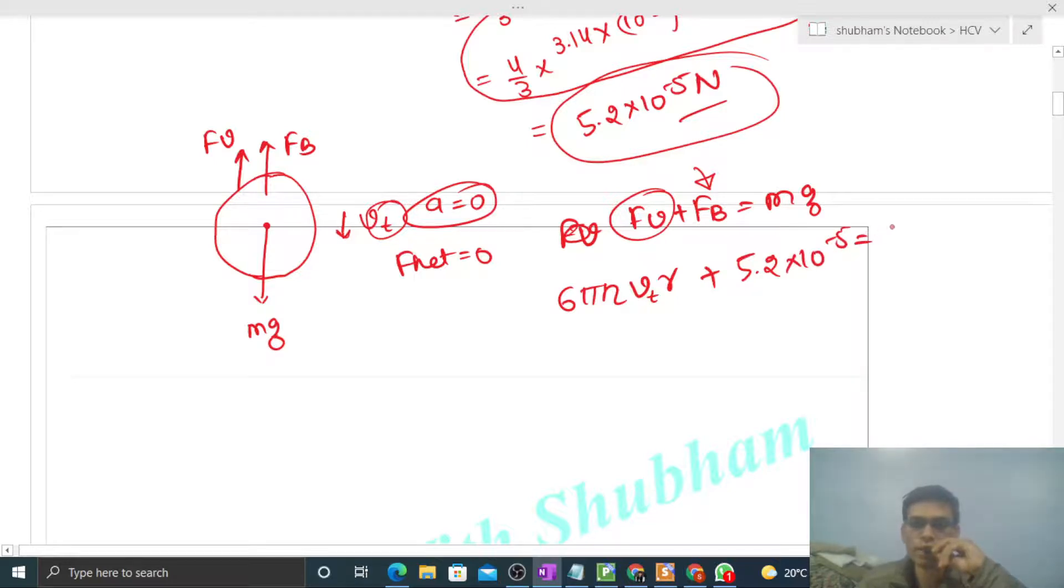This equals mg, where mass is 50 milligram times g. Let's put the values: 6 × 3.14 × η (0.8) × v_terminal × r (10^-3) plus 5.2 × 10^-5.